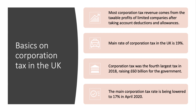Most corporation tax money for the government comes from the taxable profits of limited companies. There are all sorts of debates at the moment about the scale of corporate tax avoidance. Corporation tax in the UK is currently paid at 19 percent on the earned profits of businesses, and last year it brought in well over a billion pounds a week for the government in tax revenue.